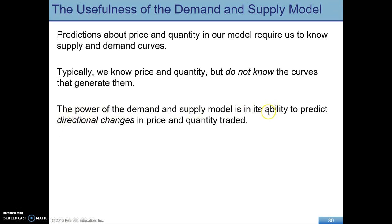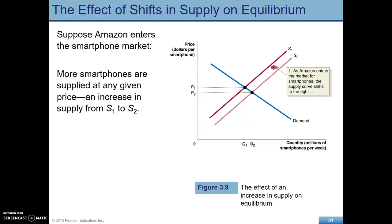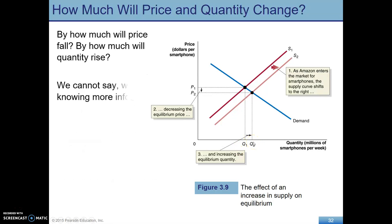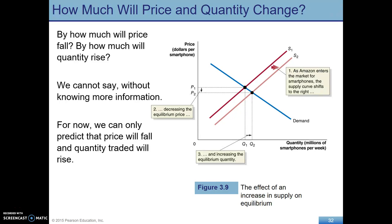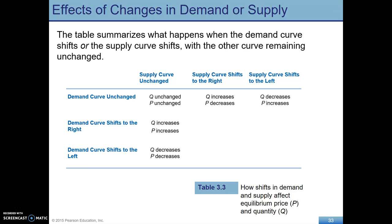What can we do with this model? We're going to be able to predict the directional changes in price and quantity traded. We can't get the exact magnitude, but we can get directions. For example, if Amazon enters the market, an increase in the number of sellers is an increase in supply — a shift to the right — which is going to lower the price and increase the quantity. You need to be really familiar with what causes what curve to shift and what will be the resulting equilibrium: lower price, higher price, lower quantity, higher quantity.